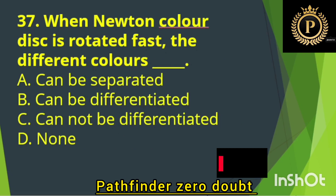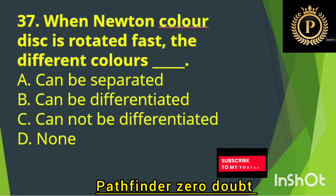When a Newton color disk is rotated fast, the different colors — Option C: Cannot be differentiated.